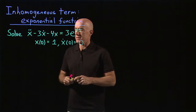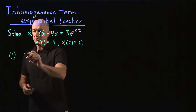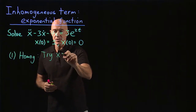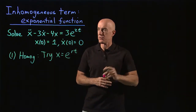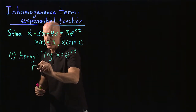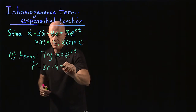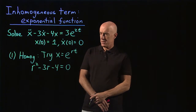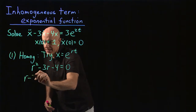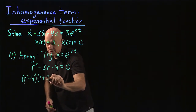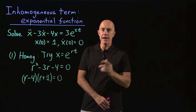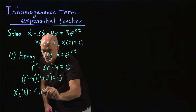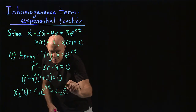Remember, it's a three-step process. The first step is to solve the homogeneous equation. We try our usual ansatz, x equals e to the rt. So the right-hand side is zero in the homogeneous equation, giving us the characteristic equation: r squared minus 3r minus 4 equals zero. We see if it's factorable — 4 is 4 times 1, so we can have minus 4 and plus 1, giving us r minus 4 times r plus 1 equals zero. So we have two roots, and the homogeneous solution is c1 times e to the 4t plus c2 times e to the minus t.